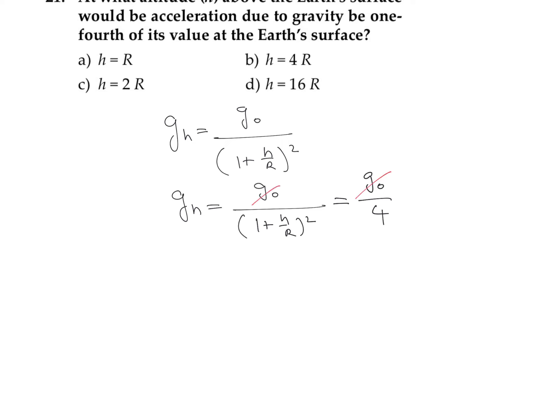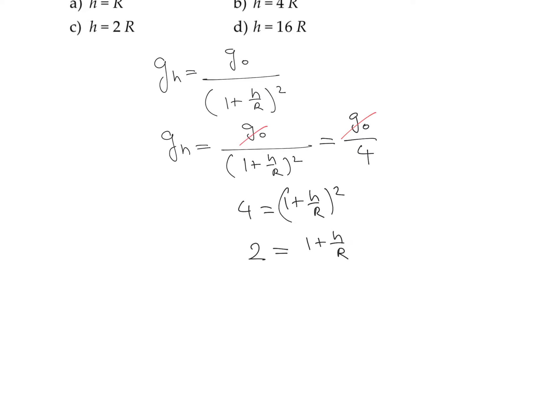We can cancel g0 on both sides, so 4 equals (1 plus h divided by R) whole square. Taking the square root of both sides, root of 4 is 2, which equals 1 plus h divided by R.